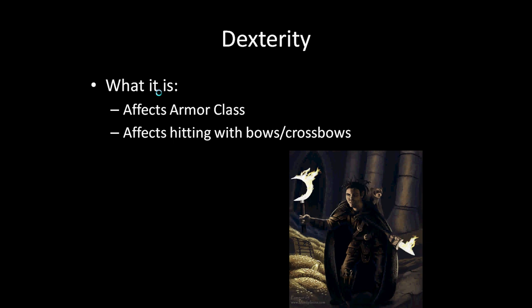Dexterity also affects your reflex saves. Reflex saves basically happen when you step on a trap — you'll be given a chance in many cases to get out of the way. It's that innate ability to quickly jump out of the way. Dexterity also affects your initiative, which is how early you go in a round. A higher dexterity will allow you to go earlier in the round. Remember, all of these are affected by the modifier — so even with 18 dexterity, that's a +4 modifier, and that's what's important.